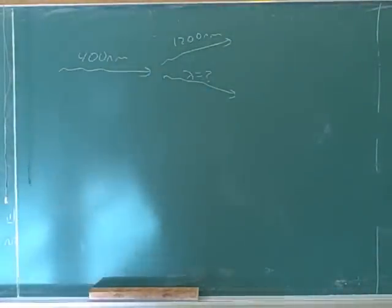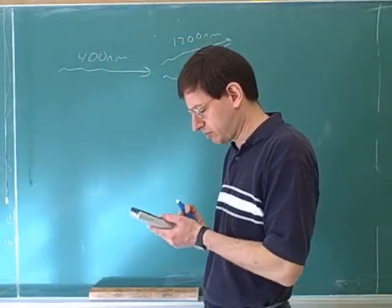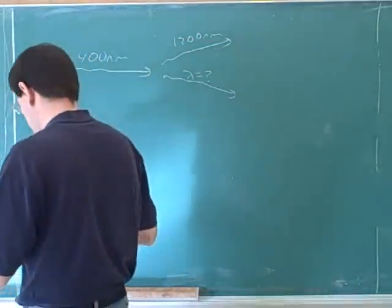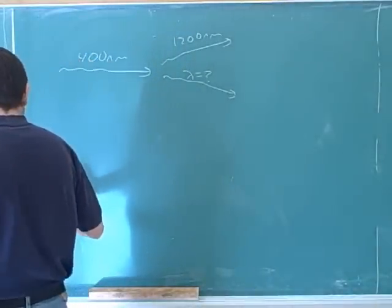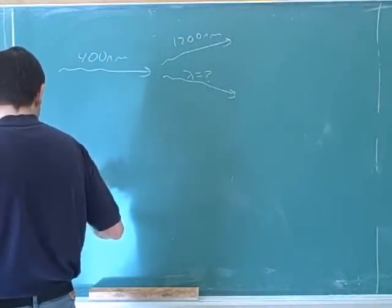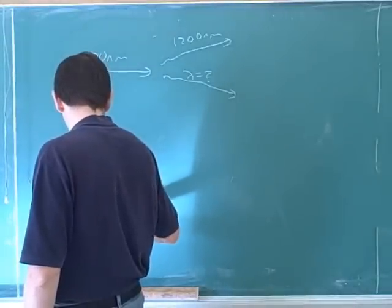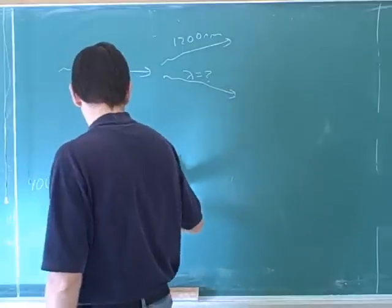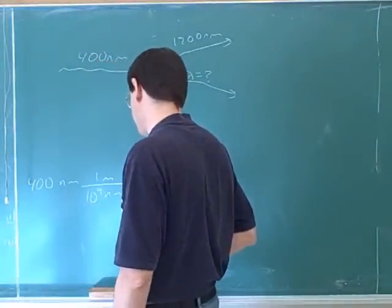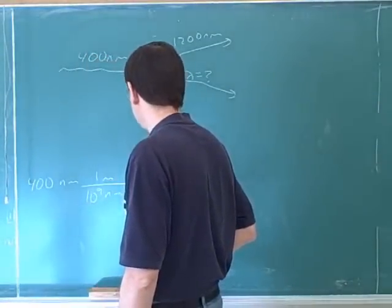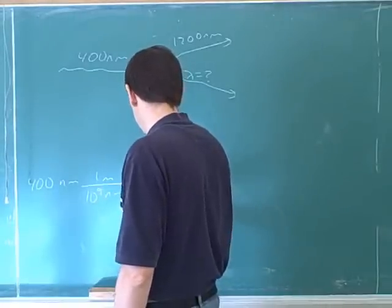What's the first calculation we need to do? We need to get the energy of the 400 nanometers. So let's do that calculation. You need to convert nanometers to meters. Right. So how would we do that? Divide by 10 to the 9th.